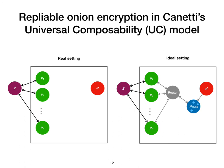Security in Canetti's universal composability model is described with respect to an ideal functionality. The scheme is secure if environment Z cannot tell whether it is operating in the real world that uses the scheme, or in the ideal world that uses the ideal functionality instead. For onion encryption, the environment can instruct the honest parties to form an onion, to process an onion, or to form a reply. In the real world, the honest parties run the appropriate algorithm from the onion encryption scheme. In the ideal world, the honest parties relay the instruction to the ideal functionality F-Rows, which is responsible for forming onions, processing onions, and forming replies.